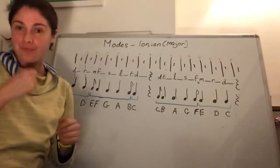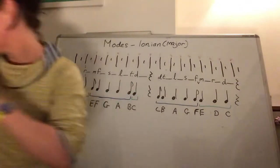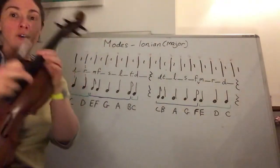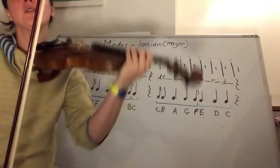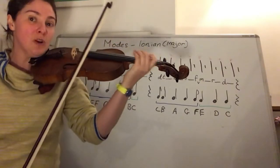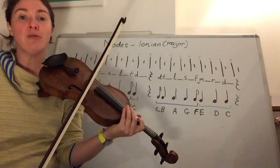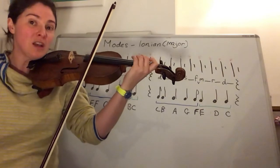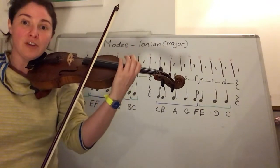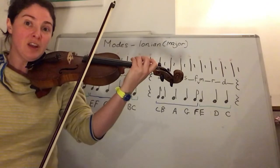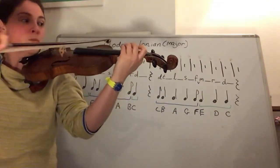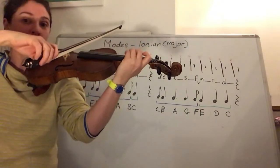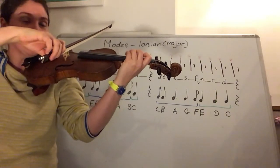Now we're going to have a go at putting it onto our instruments. Our scale is going to be a C major scale — let's just make sure we've got the notes. Cellos and violas, you're going to start on your open string. Violins, you're going to start with the third finger on the G string. If you've learned third position, you'll have first finger on the G string; if you're in first position, you have third finger on the G string.